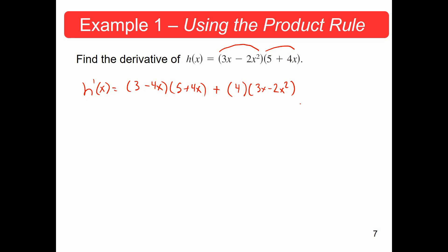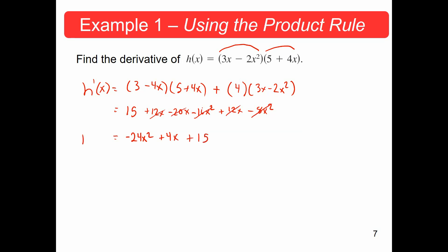Now we need to expand and combine like terms. (3 − 4x)(5 + 4x) gives 15 + 12x − 20x − 16x², and 4(3x − 2x²) gives 12x − 8x². Combining: −16x² − 8x² = −24x²; 12x + 12x − 20x = 4x; and the constant is 15. So our derivative is −24x² + 4x + 15.